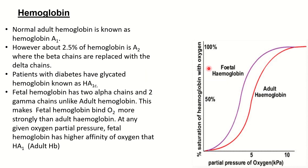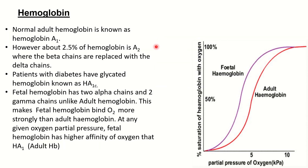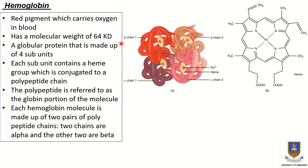In adults, the normal hemoglobin is known as hemoglobin A1, which contains two alpha chains and two beta chains. However, about 2.5% of hemoglobin in adults is A2, where the beta chains are replaced with delta chains.